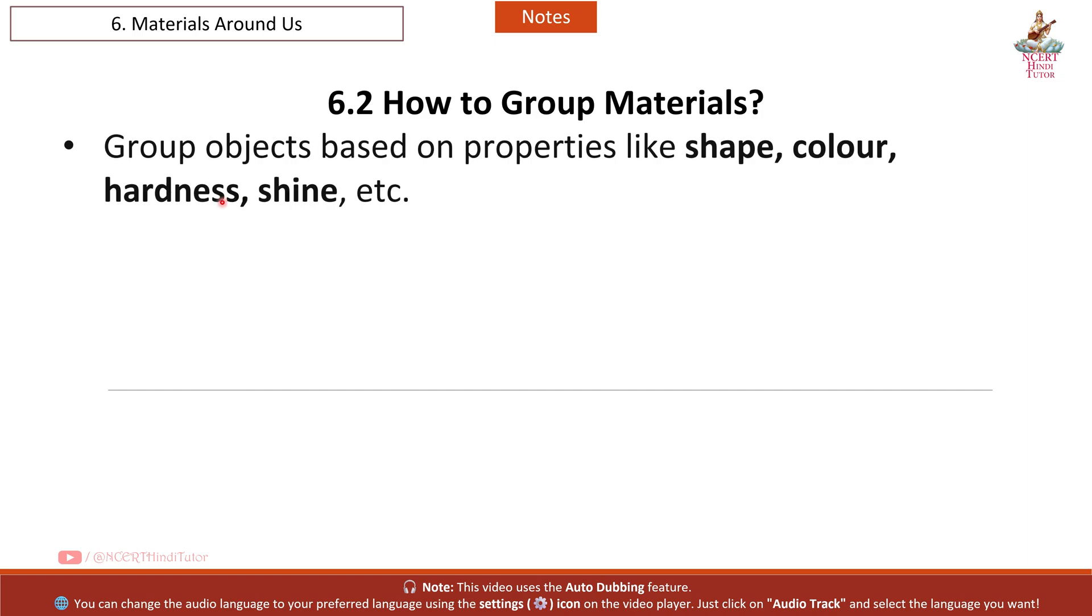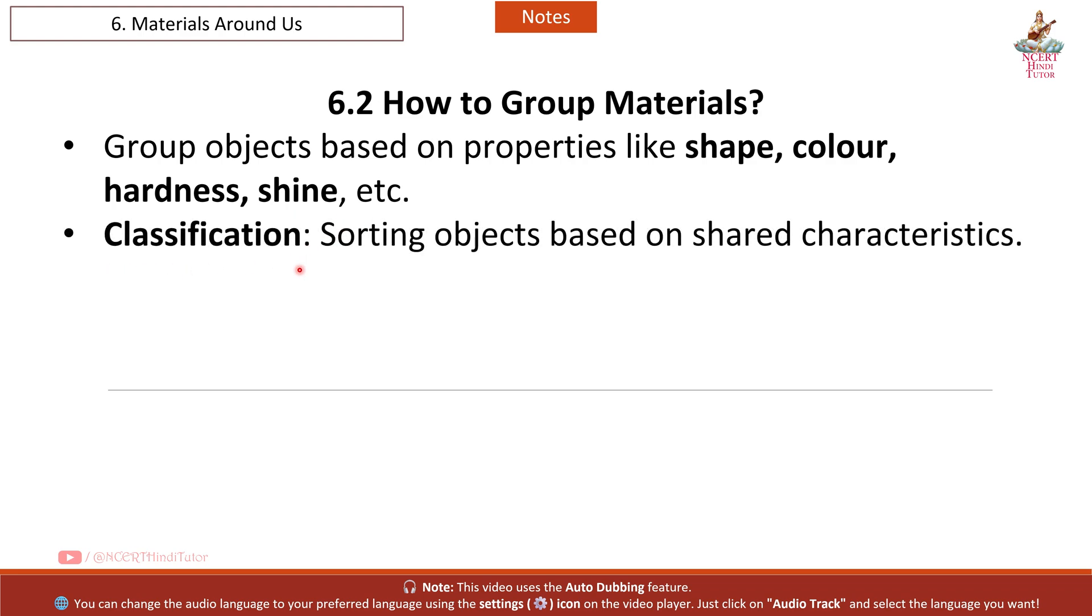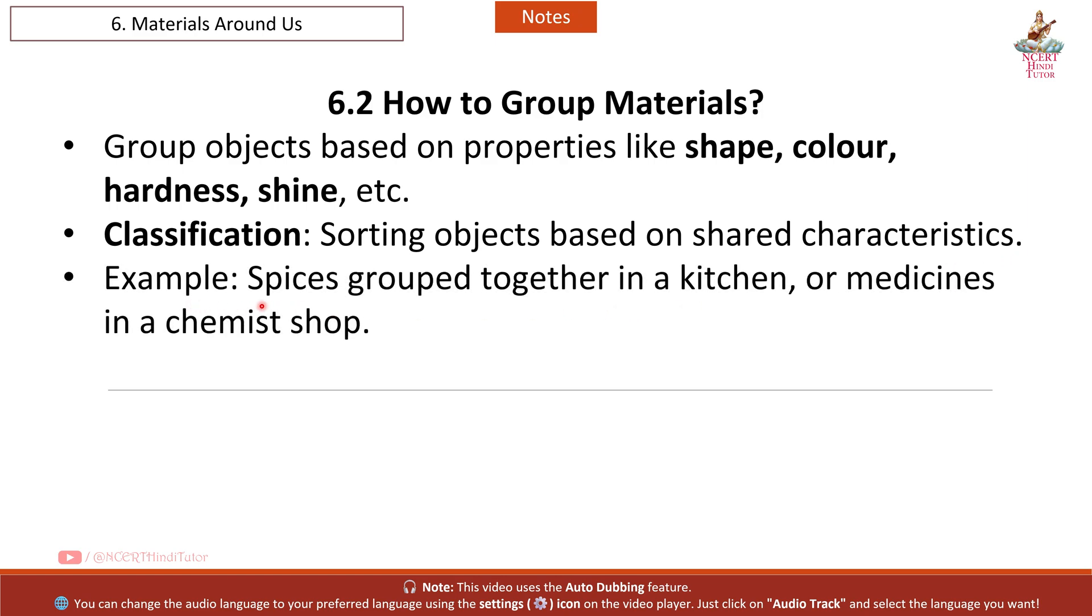6.2 How to Group Materials. Group objects based on properties like shape, color, hardness, shine, etc. Classification: sorting objects based on shared characteristics. Example: spices grouped together in a kitchen or medicines in a chemist shop.